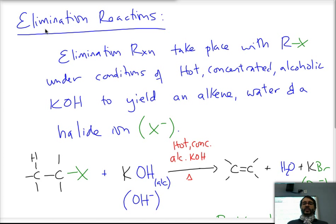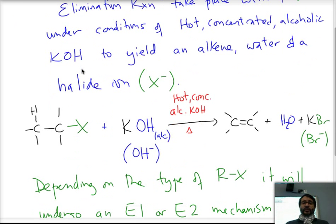An elimination reaction takes place when a halogen alkane, under the conditions of hot concentrated alcoholic potassium hydroxide, it could be sodium hydroxide as well, actually loses the bond to the halogen and also breaks a carbon-hydrogen bond to yield an alkene by bringing those two carbons that now are deficient in one bond, and also gives water and a halide ion. The potassium ion is just a spectator ion, so the reality is that you have the hydroxide ion and the halide ion.